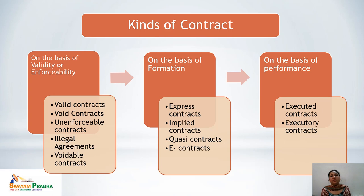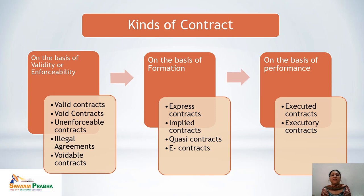In executory contracts, either one or both parties are yet to perform. For example, if Mr. A offered his house to Mr. B and Mr. B accepted, but either Mr. B has not paid or Mr. A has not delivered the property papers, the contract is executory. If Mr. B has paid but Mr. A has yet to deliver the papers, it is still executory. Contracts where one or both parties have not yet performed are known as executory contracts.